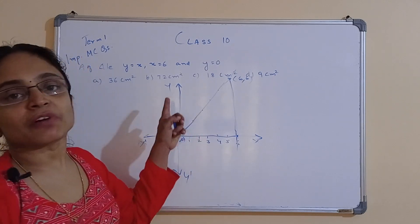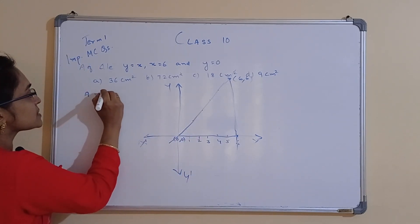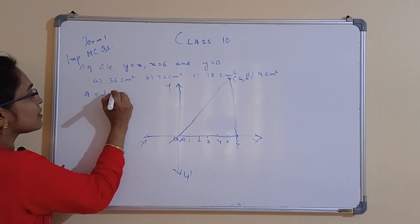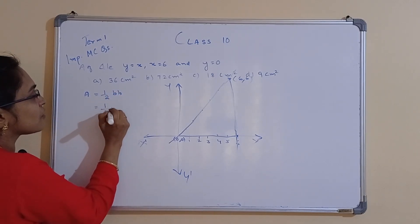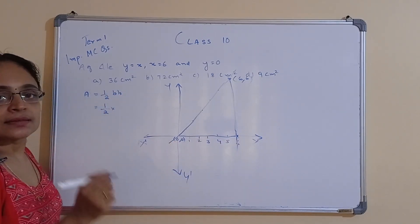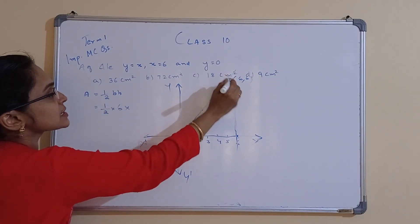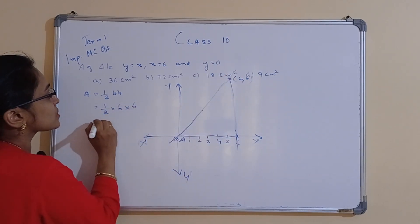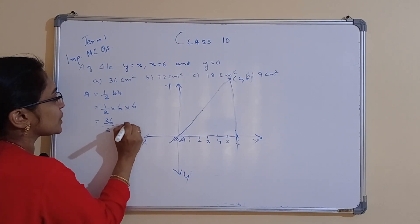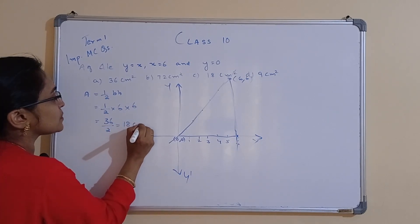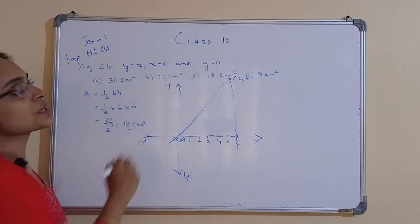So we have to find the area of this triangle. Area of a triangle equals half base times height. The base is 6 units and the height is 6 units. So area = 36/2 = 18 cm². So this option is correct.